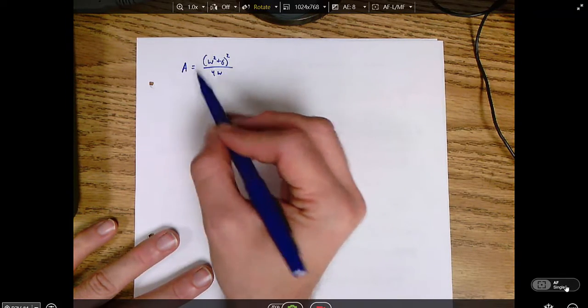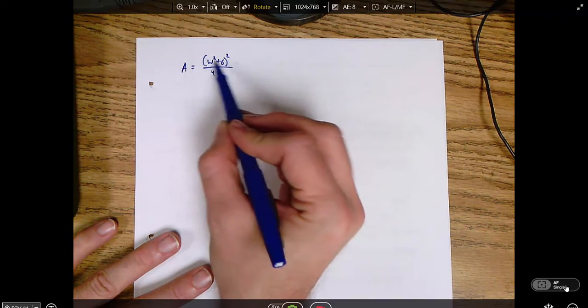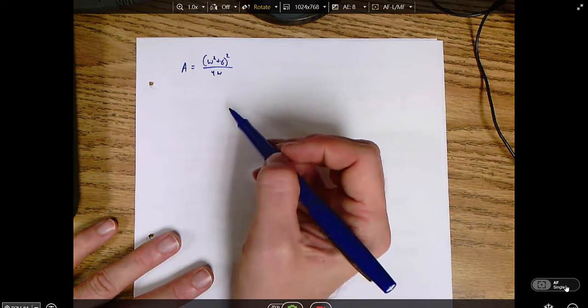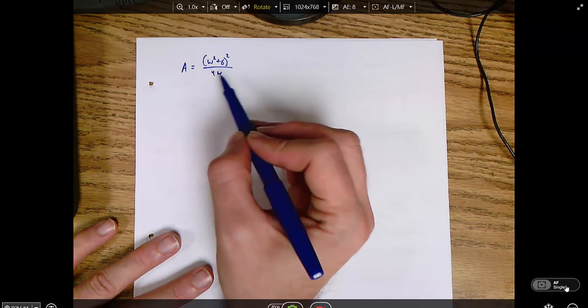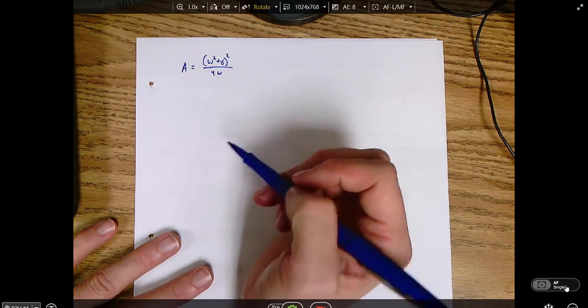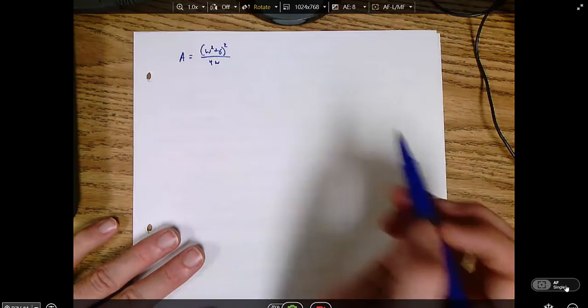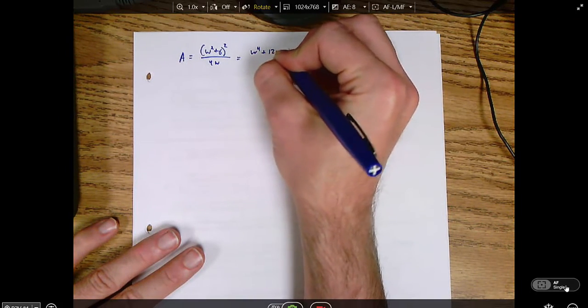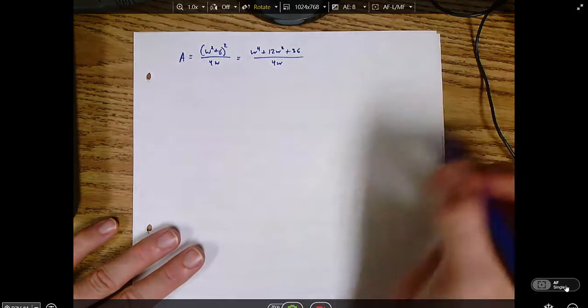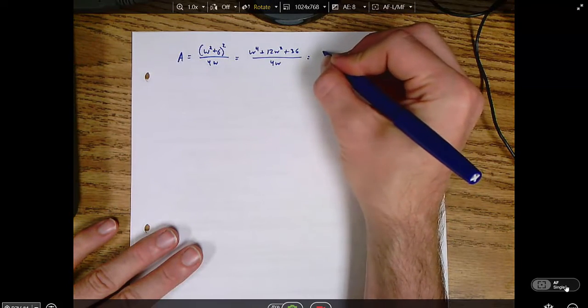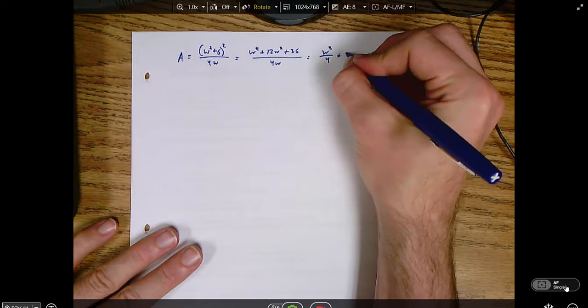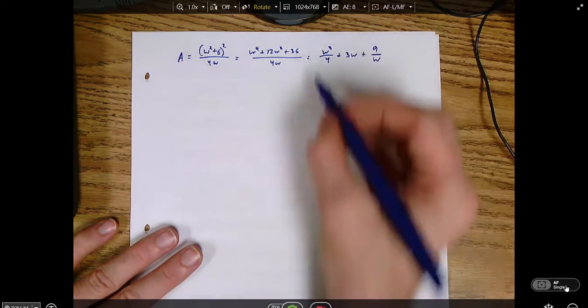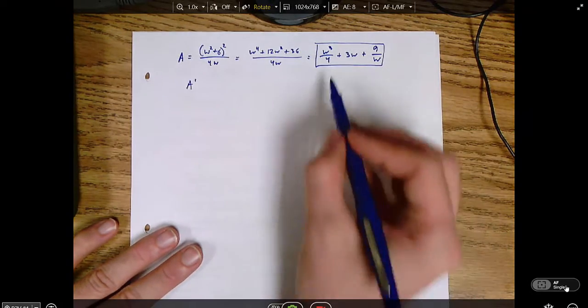So we've got a couple of choices here. We could use the quotient rule. That feels like it might be ugly. We could multiply the top out and divide everything by 4w term by term. That might be nice because then we'll just have a bunch of terms that we can use the power rule on. A different thing we could do is multiply both sides by 4w and then do implicit differentiation on both sides. I'm going to go ahead and multiply out the top and then divide. So if I multiply out the top, I've got w to the fourth plus 12w squared plus 36 divided by 4w, which is the same thing as w cubed over 4 plus 3w plus 9 over w.